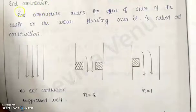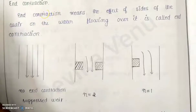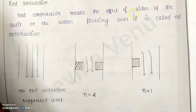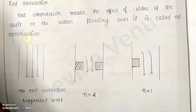Hello students, now we will see another concept known as N contraction. In this particular case, we are considering the effect of sides on the discharge. There is a channel where the water is flowing freely with no contraction — this is known as a suppressed weir, because there are no ends here, it is flowing freely.